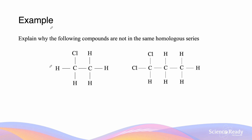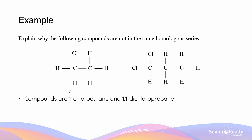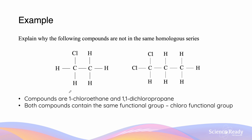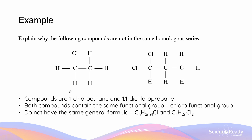This example reads: explain why the following compounds are not in the same homologous series. First, we should identify what the compounds are. On the left we have 1-chloroethane and on the right we have 1,1-dichloropropane. Both compounds contain the same functional group, which is the chloro functional group. However, they do not have the same general formula. The 1-haloalkane has a formula of CnH2n+1Cl, whereas the dihaloalkane has a formula of CnH2nCl2.